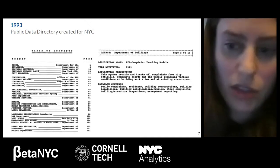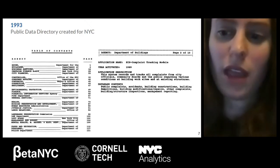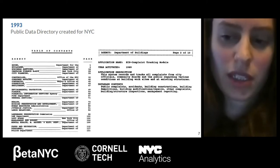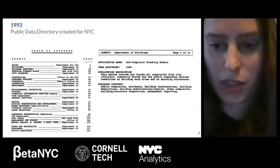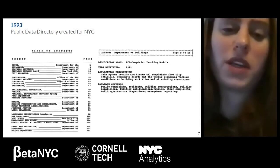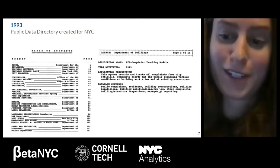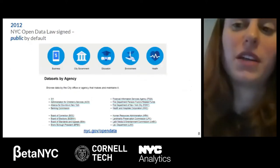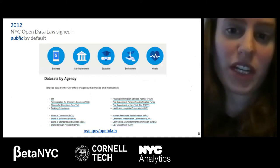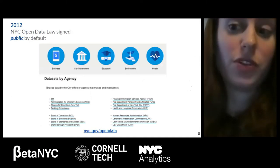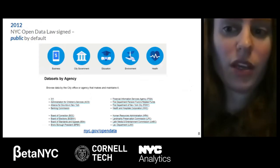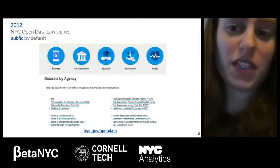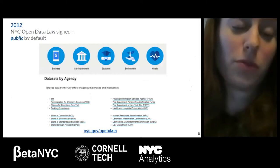With this public directory, someone could see a listing of data available at each agency and read a description of what it contained. For example, there's a Department of Buildings listing showing a database of public complaints on building worksites. If you were looking at this directory in the 90s and wanted it, you could request the agency to provide the information on a CD or a printout. Moving into the 2000s, in 2012, advocates, city staff, and elected officials came together to celebrate the passage of New York City's open data law.